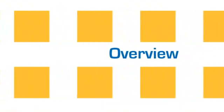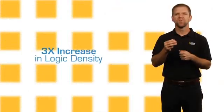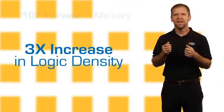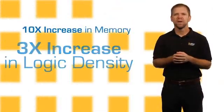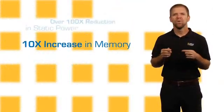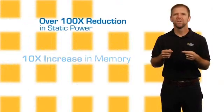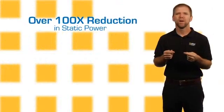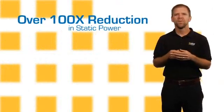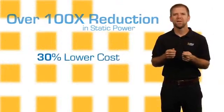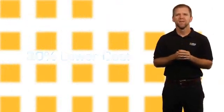Compared to its popular predecessor, the Mach XO, the Mach XO2 family delivers a 3x increase in logic density, 10x increase in memory, over 100x reduction in static power, and up to 30% lower cost.